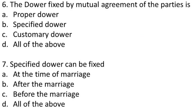Question 7: Specified dower can be fixed — (A) at the time of marriage, (B) after the marriage, (C) before the marriage, (D) all of the above. Specified dower can be fixed at the time of marriage, after the marriage, and before the marriage. The answer is D: all of the above.